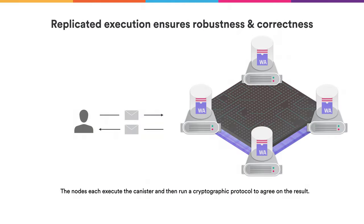To achieve correctness and robustness of the results computed by the Internet Computer, a canister is not run on a single node but on multiple nodes. A single node could fail and the state would be lost, or a node could be malicious and the result might not be correct. So the protocol makes sure canisters are run on multiple nodes, which then run the canister on the message and confirm they achieved the same result. This guarantees that canisters run forever and the results they compute are actually correct.